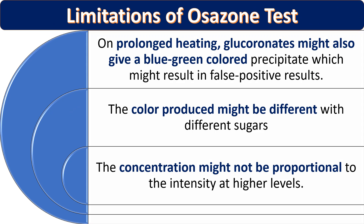There are some limitations. If heating is done for a prolonged time, gluconates might also give a blue-green color precipitate, which may result in false positive results — giving a positive result when pentose sugar is actually absent. Additionally, color production might differ with different sugars: ribose may give a slightly different shade, so the color is not exactly fixed as blue-green every time — it may vary with different solutions and carbohydrates.